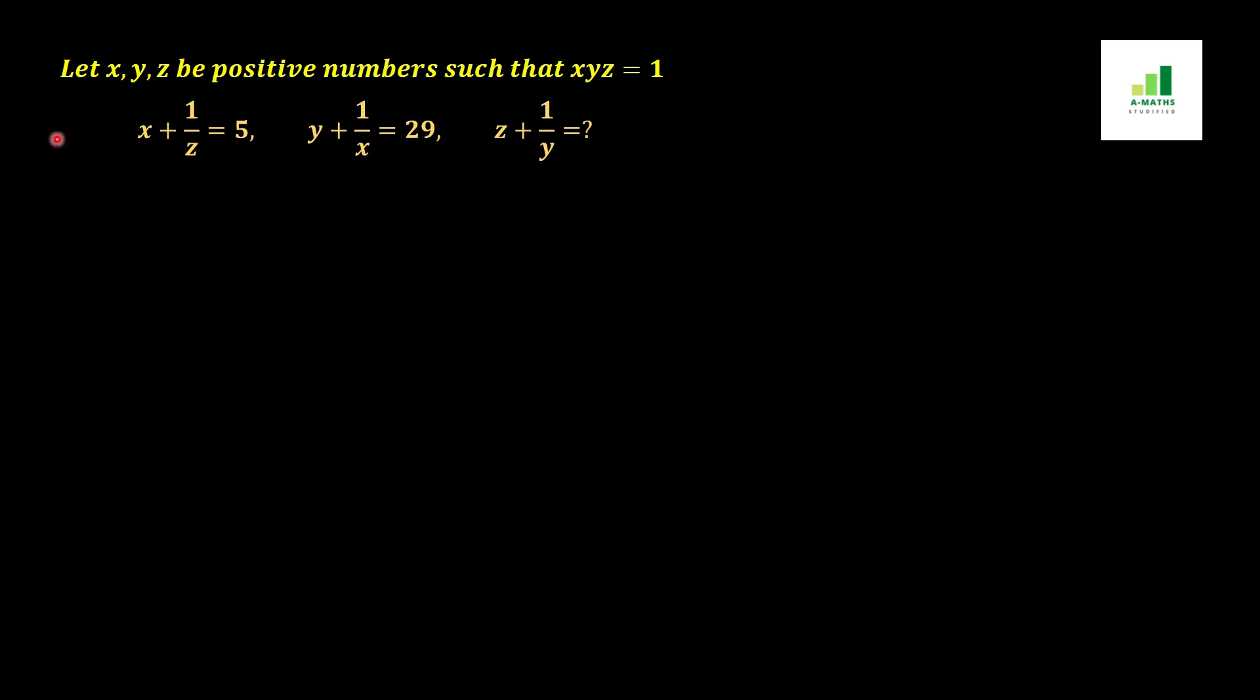Our given question is: let x, y, z be positive numbers such that xyz = 1. If x + 1/z = 5, y + 1/x = 29, then find the value of z + 1/y.